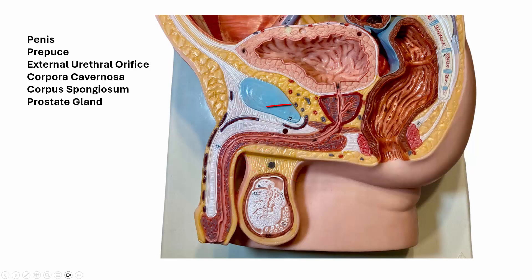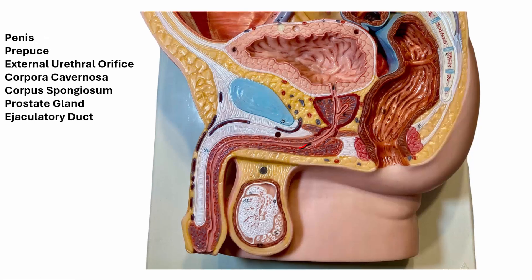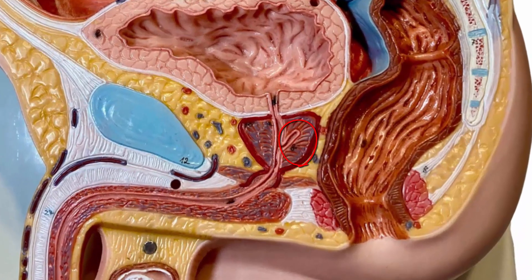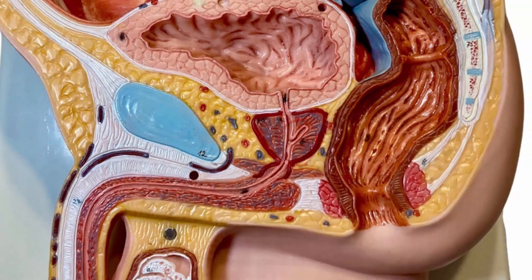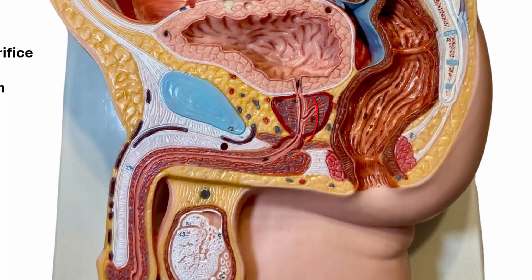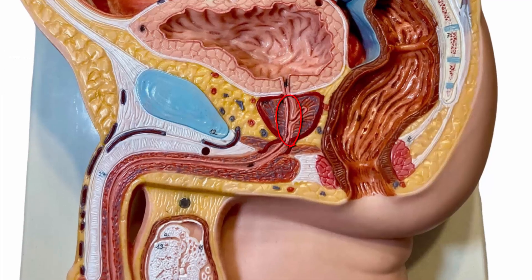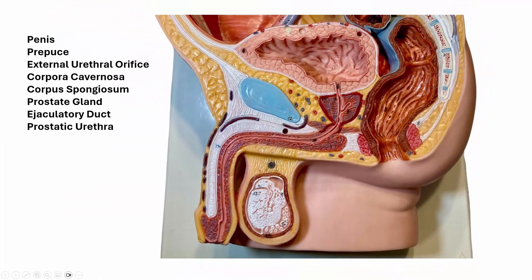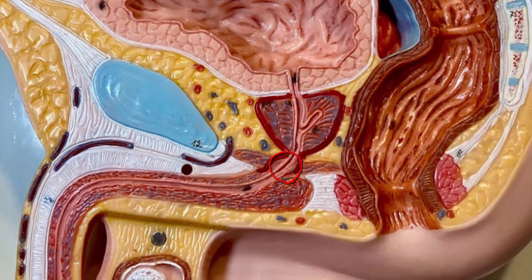The prostate gland is visible here. The ejaculatory duct empties into the prostatic urethra. Here is the prostatic urethra, then we have the membranous urethra, and then the penile or spongy urethra.